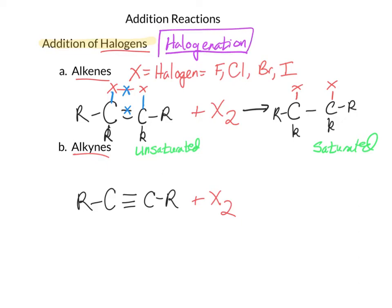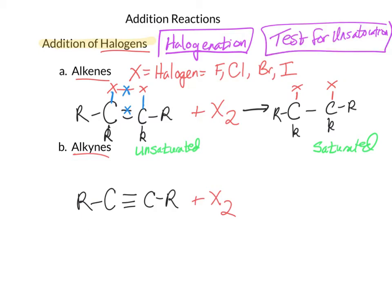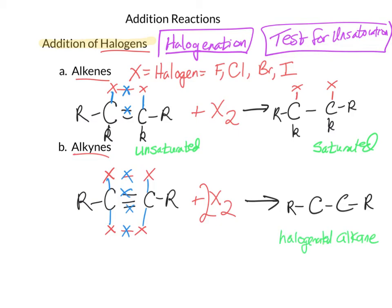This reaction is often used to identify how many multiple bonds are in a compound. When used with bromine, we call this the test for unsaturation. When we do this reaction with alkynes, it happens twice, so we need two of the X2. One set will be above the triple bond and one below, and we make a bond, break a bond, make a bond, break a bond, then repeat. The overall reaction gives us a halogenated alkane with four halogen atoms added across the triple bond.